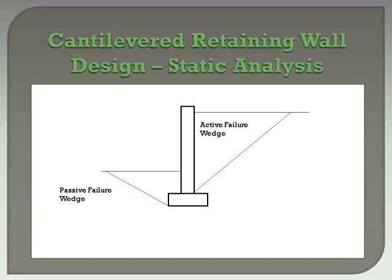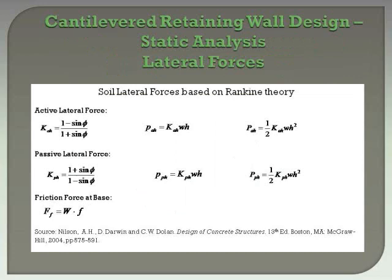First we will look at a typical cantilevered retaining wall. As the top of the wall flexes, two failure wedges will develop that will mobilize the shear stresses in the soil. The active wedge is developed in the backfill as the wall moves away, and the passive wedge is developed at the toe of the wall as the wall moves into the soil.